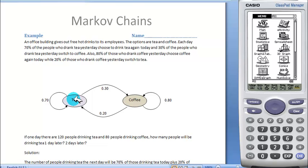Welcome to our Markov Chains activity. We start our activity by giving an example. We have tea drinkers and coffee drinkers.